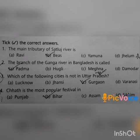Third question: Which of the following cities is not in Uttar Pradesh? Option A: Lucknow. Option B: Jhansi. Option C: Gurugram. Option D: Varanasi. Answer is option C: Gurugram.